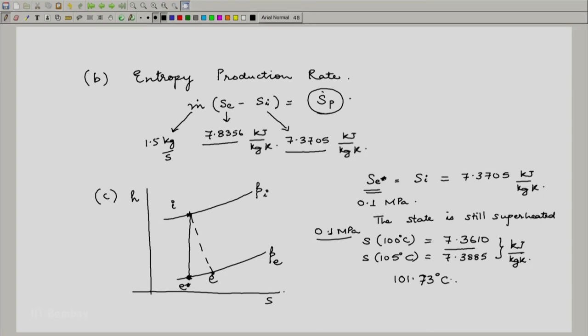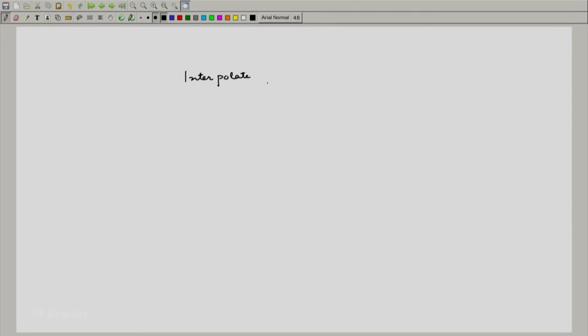And what we do now is, we just go ahead and interpolate for h 2 and we realize that h e star that is assuming that the exit was isentropic, we can calculate h e star to be an interpolation between 100 and 105 degree centigrade that is at 101.73 and we get roughly 2679.36 kilo joule per kg. We apply the first law for open systems assuming this and we get v e star by 2 and what we do then, this can be found out by h i plus v i square by 2 minus h e star.